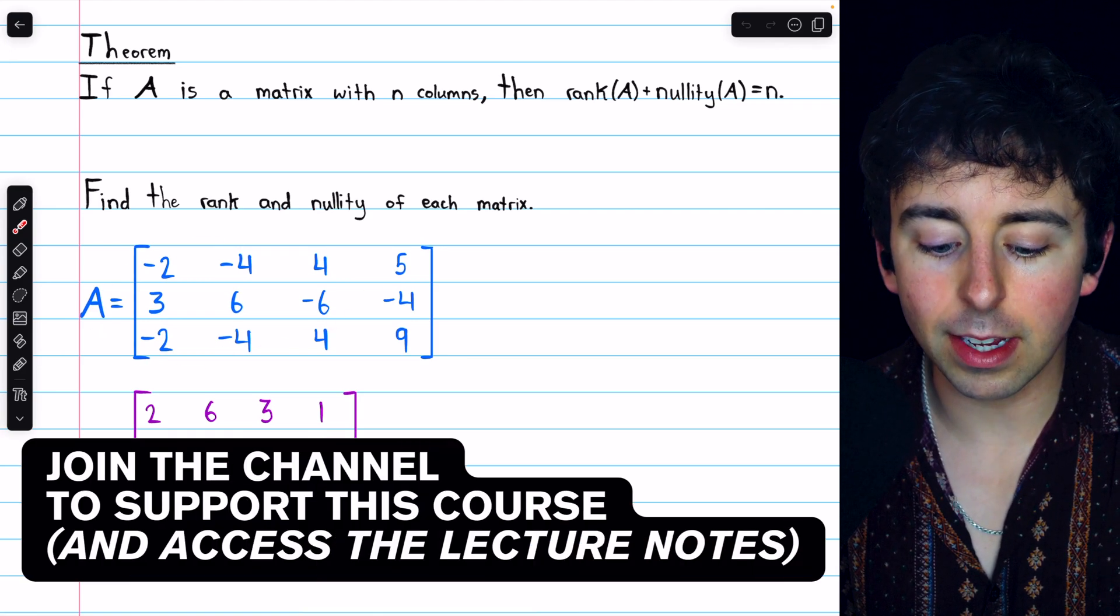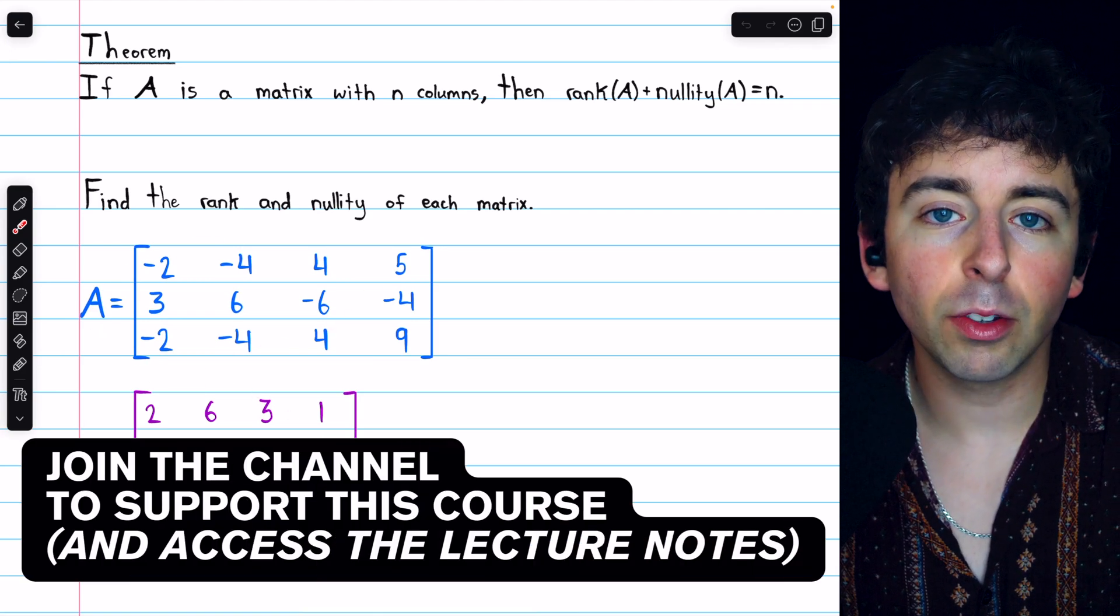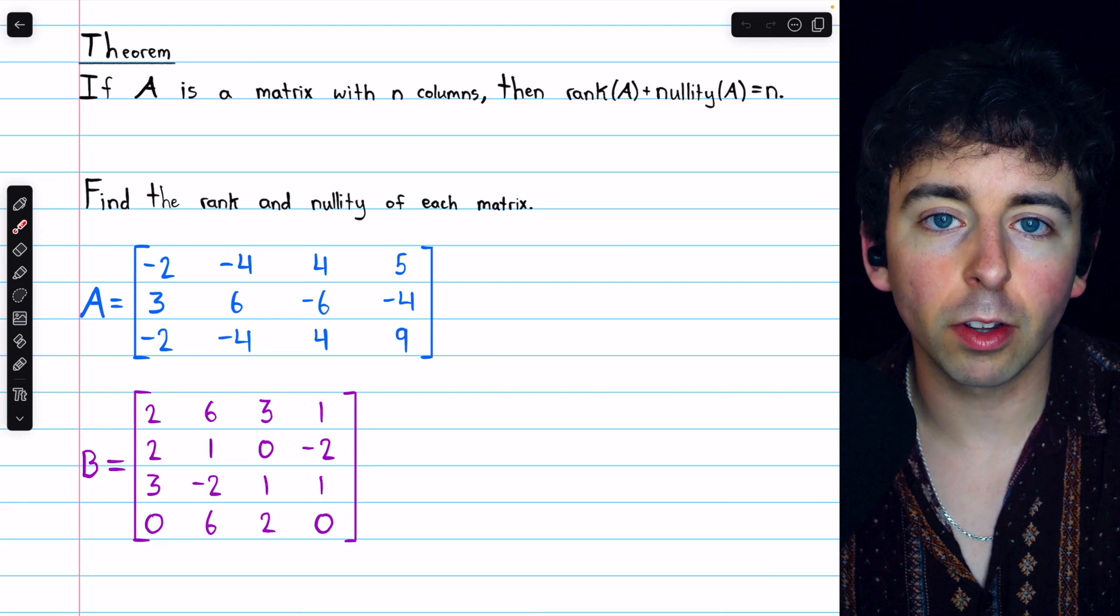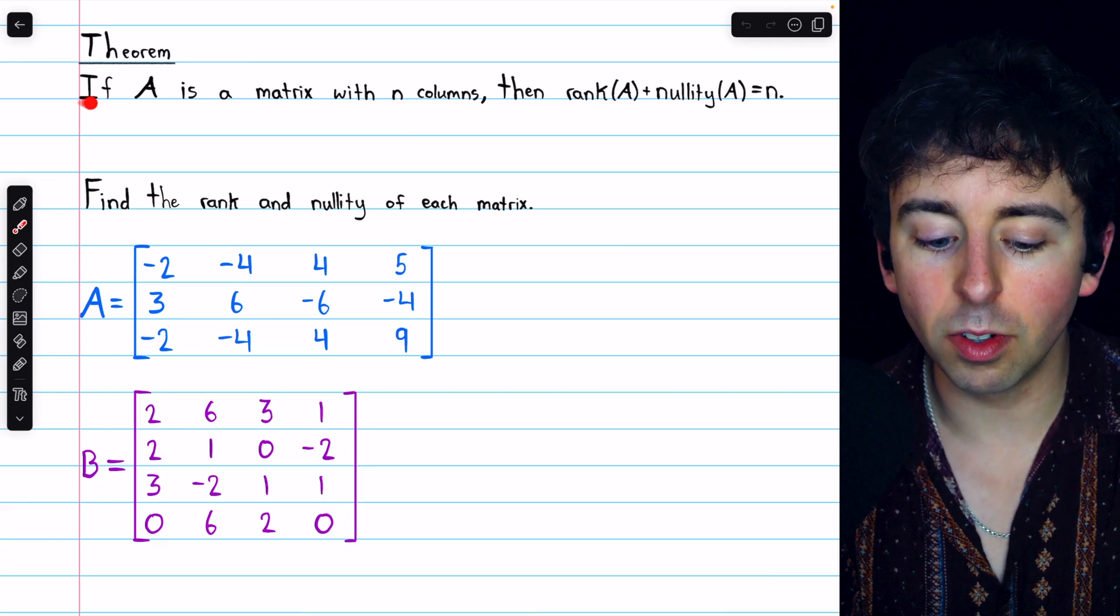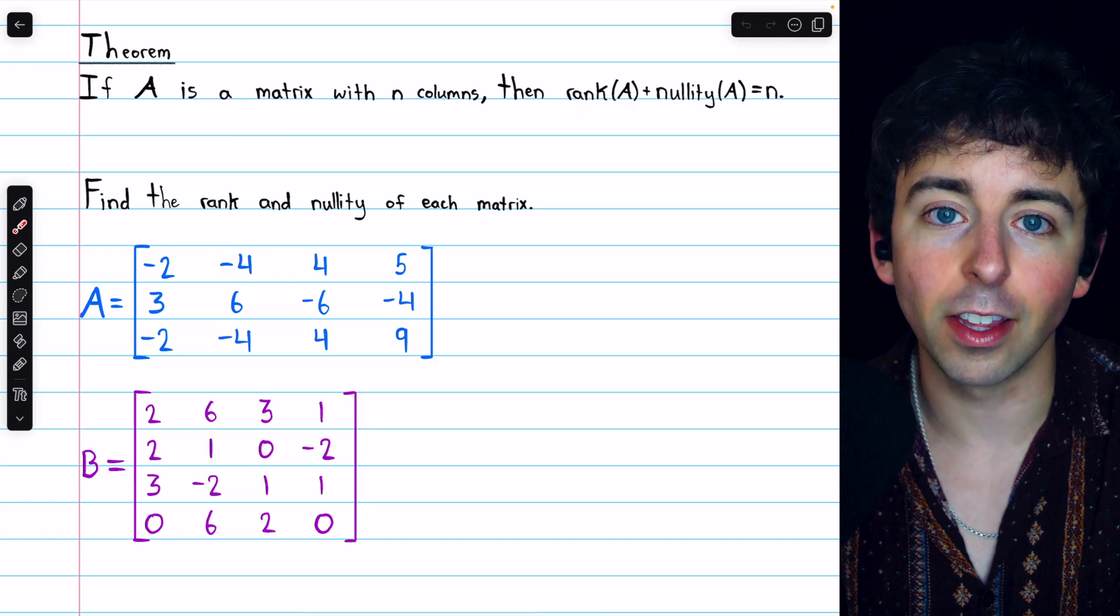Let's find the rank and nullity of these two matrices. In each case, we'll reduce the matrix to row echelon form to find the rank, and then I'll show you how to find the nullity using this theorem and not using it.